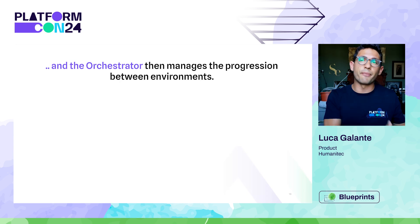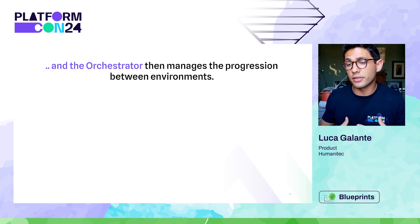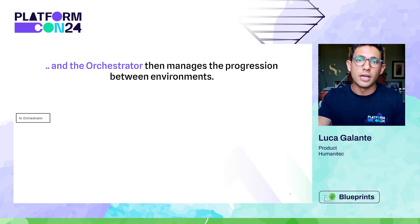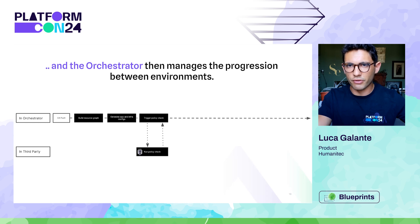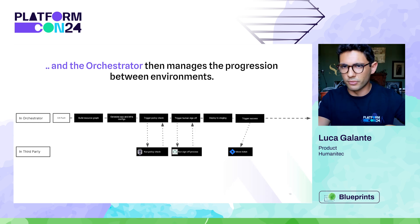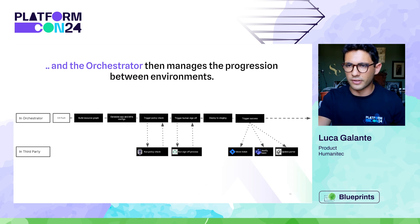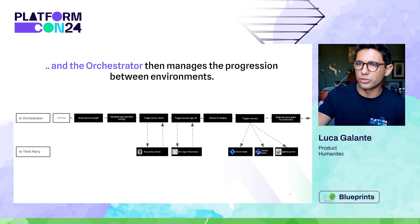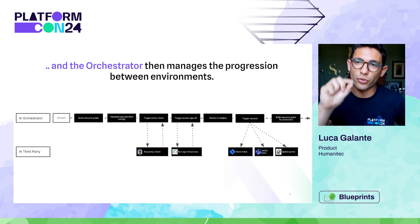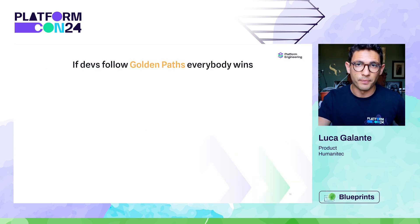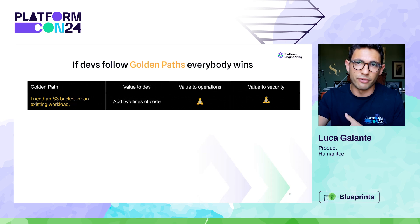Graph-based backends don't just handle complex logic — they also manage progression between environments, so you're not losing pipeline functionality. For example: git push, build a resource graph, generate new infrastructure configurations, trigger a policy check, trigger a human sign-off, update the portal to show changes, and keep pushing forward to production. You still have the entire pipeline functionality, but with all the complex logic built in — requiring no complex work from either the platform team or the developer.